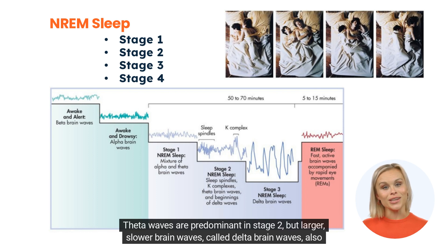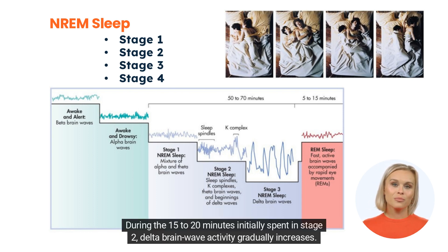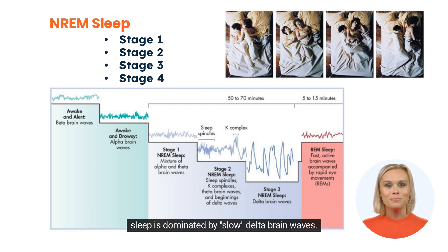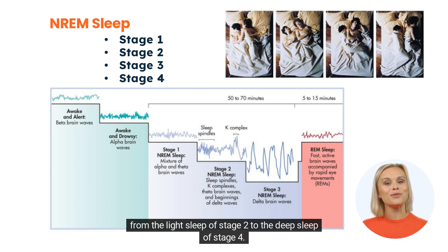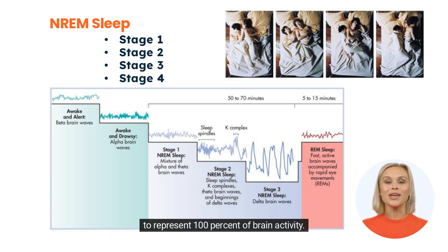Theta waves are predominant in stage two, but larger, slower brain waves called delta brain waves also begin to emerge. During the 15 to 20 minutes initially spent in stage two, delta brain wave activity gradually increases. You now enter the deepest stage of sleep — stage three, or slow-wave sleep — so called because this stage is dominated by slow delta brain waves. At one time, stage three was divided into stages three and four. During the 20 to 40 minutes spent in the night's first episode of stage three NREM, delta waves eventually come to represent 100% of brain activity. At that point, heart rate, blood pressure, and breathing rate drop to their lowest levels.